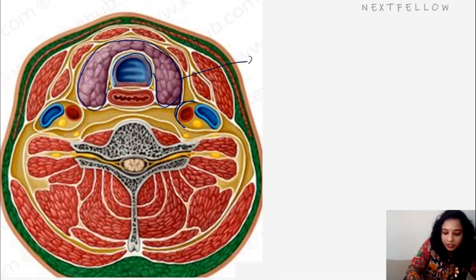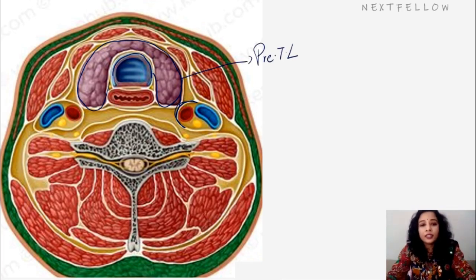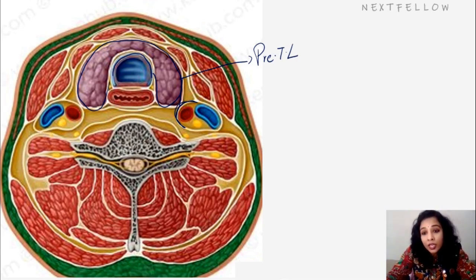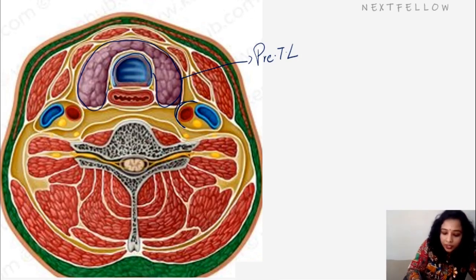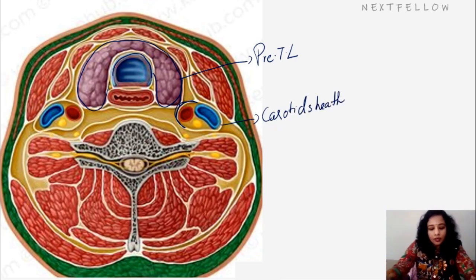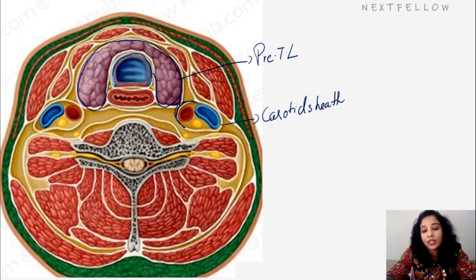The pre-tracheal layer continues as the buccopharyngeal fascia, contributes to the formation of the carotid sheath, and invests in front of the larynx and trachea, attaching to the cricoid and thyroid cartilages.